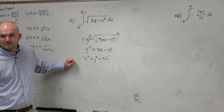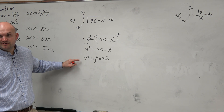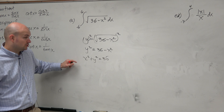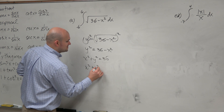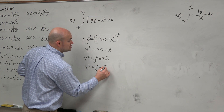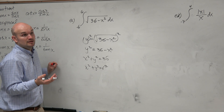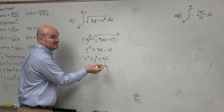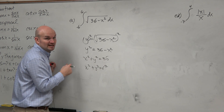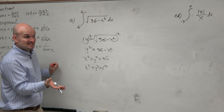That looks a little bit more familiar, right? That is the equation of a circle. And remember, the equation of a circle is x squared plus y squared equals r squared, where r represents the radius. So by looking at this, I can determine the radius is going to be 6.